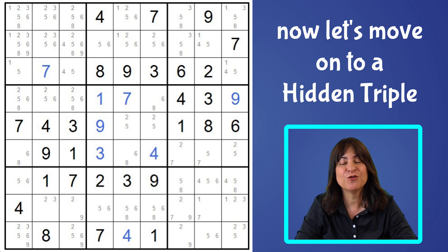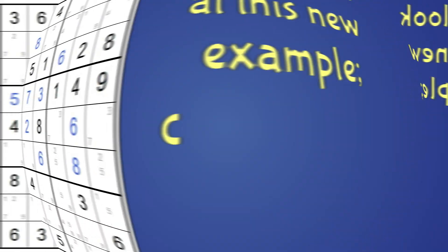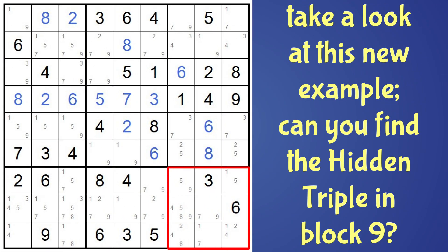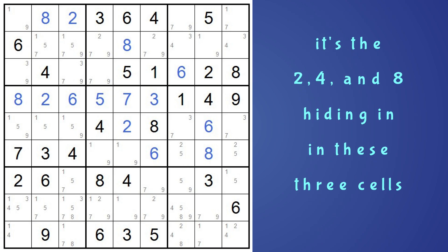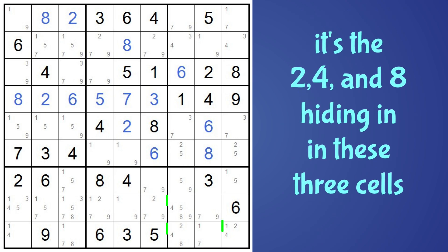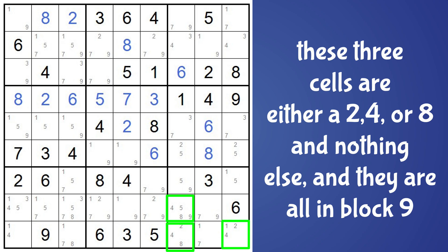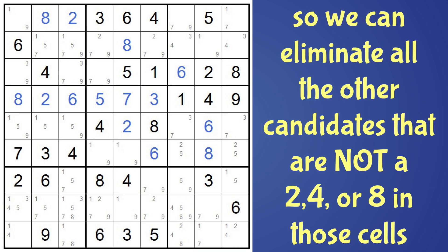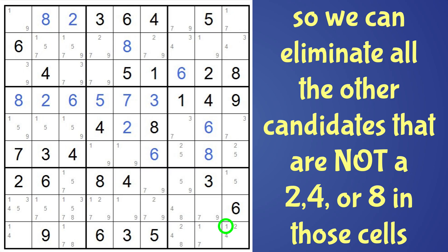Now I think you're ready for a hidden triple. Take a look at this example. Can you find the triples that are hiding in block nine? It's the two, four, and eight hiding in these three cells. Those three numbers are split between these three cells, and that means these three cells have to be either a two, a four, or an eight — and nothing else. So we can eliminate the five-nine from this cell and the one from here.